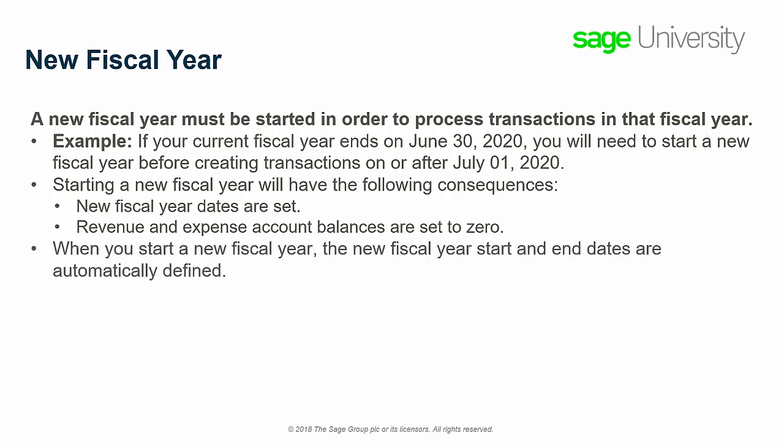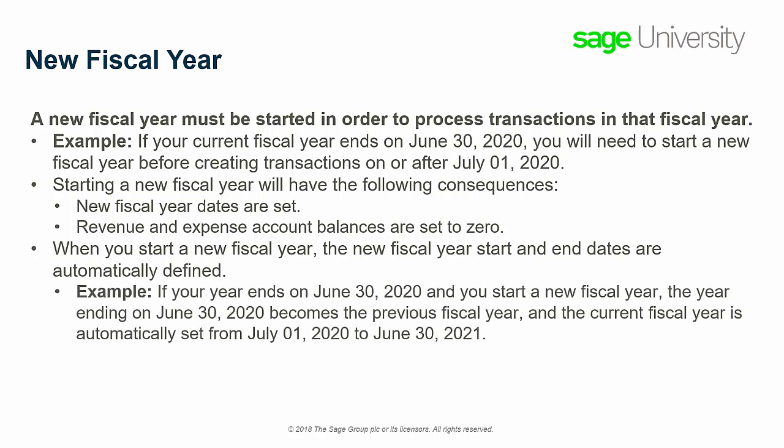When you start a new fiscal year, the new fiscal year start and end dates are automatically defined. For example, if your year ends on June 30, 2020 and you start a new fiscal year, then the year ending on June 30, 2020 becomes the previous fiscal year, and the current fiscal year dates are automatically set to July 1, 2020 to June 30, 2021.